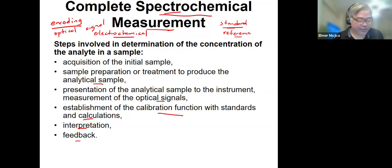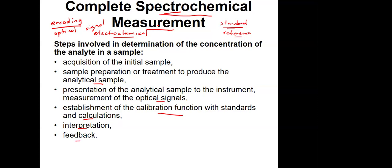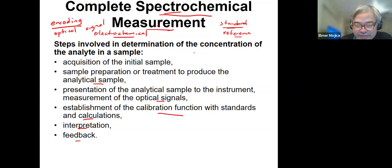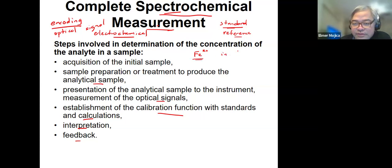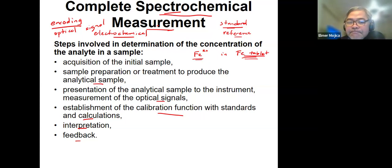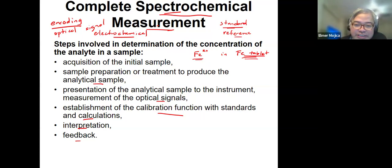Try to recall how you do spectrochemical measurement in your experience. Let's say you are asked to measure the iron content in iron tablets. How did you do the analysis following these steps — determining the concentration of the analyte in the sample?